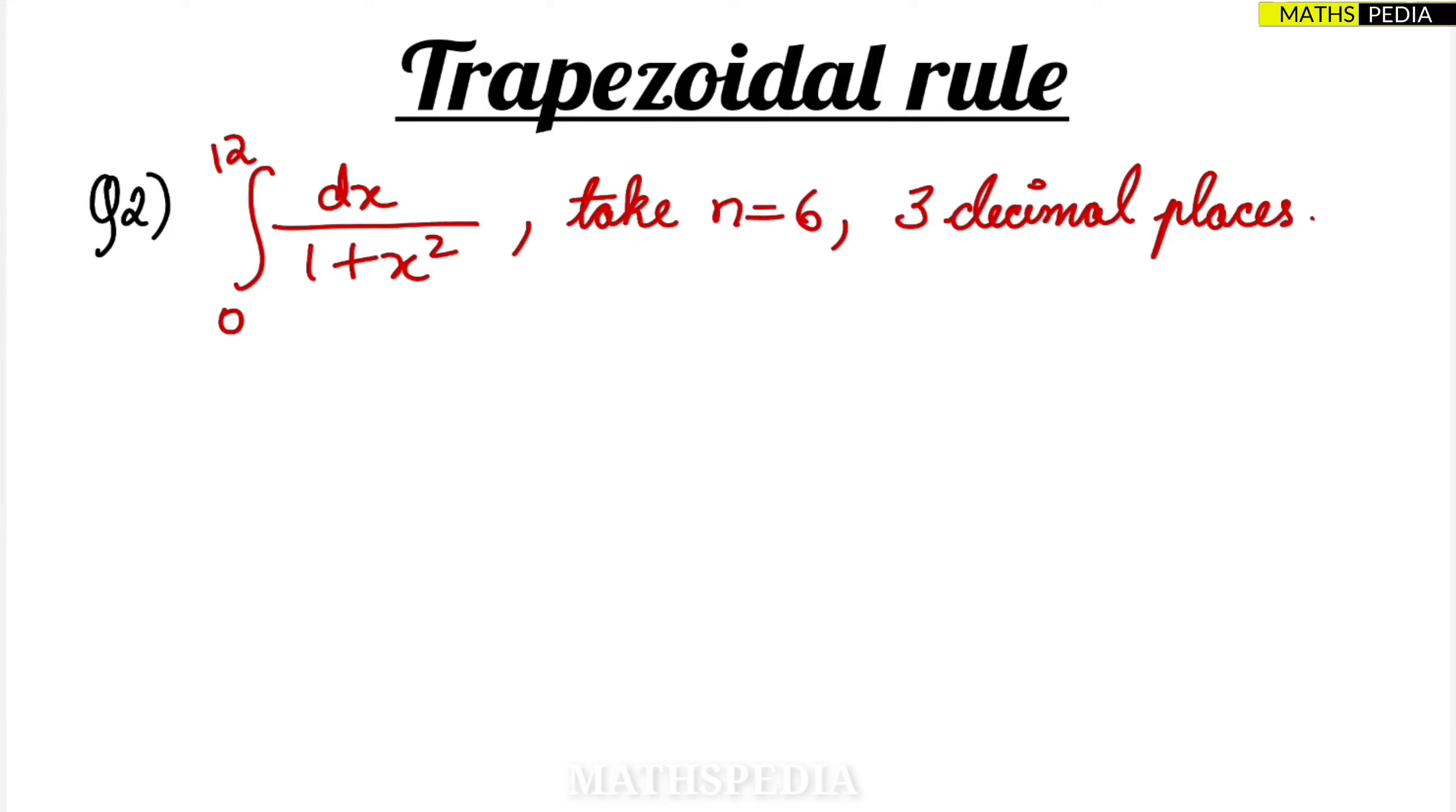So hey guys, in this video we will be solving the second problem. So here I have taken the second problem. So what is the lower limit and upper limit? Lower limit is nothing but 0 and upper limit is 12, and we have said that take n is equal to 6.